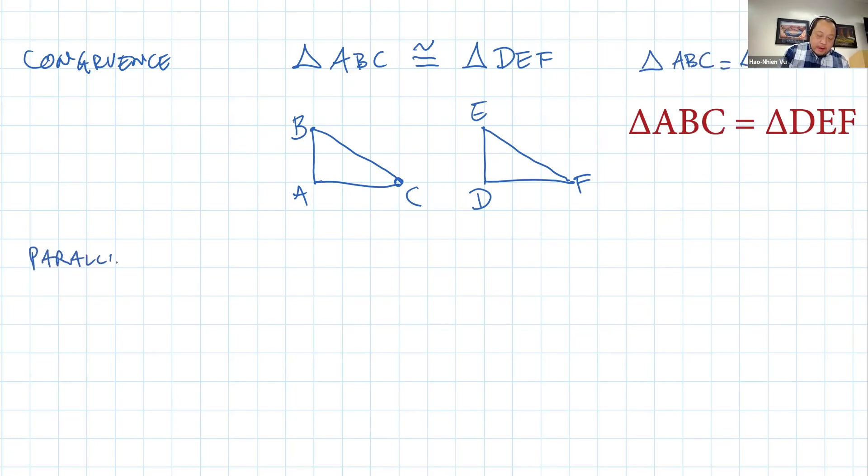Parallel. The symbol in the US is two parallel, two vertical parallel lines. And the symbol in Vietnam are two slanted parallel lines. So we say line L is parallel to line M. Over here is line L parallel to line M.